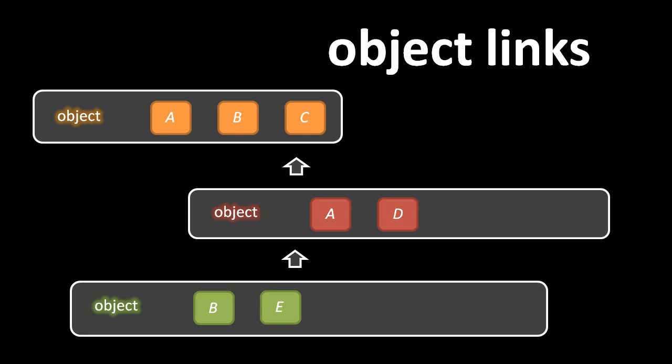The red object has two properties, A and D. And the green object has two properties, B and E. If the green object has a link pointing to the red object, and the red object has a link pointing to the orange object, what this means is that when you access a property in the red object, if there is no property of that name in the red object, JavaScript will follow the link and look in the linked object for a property of that name.